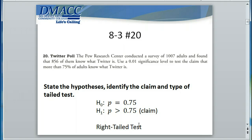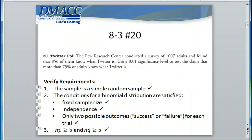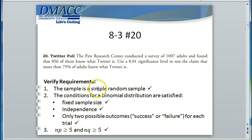Before we continue with our testing, we need to identify what type of distribution we're going to use to test our hypotheses. There are some requirements to verify. The first requirement is that the sample is a simple random sample. It doesn't explicitly state in this problem that the 1,007 adults were chosen in a simple random way, but earlier at the beginning of the problem section, it says to assume that a simple random sample was chosen and that we have all the other conditions met.